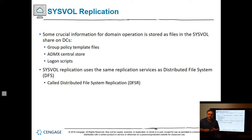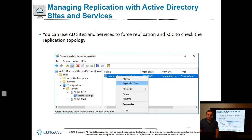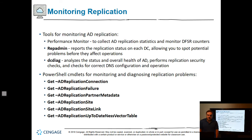Sysvol replication is involved when you have global catalogs. By default, all domain controllers are global catalogs unless you uncheck that box. Crucial domain operation information is stored in the Sysvol folder, and Sysvol replication uses DFSR. In Active Directory Sites and Services, go to NTDS Settings of the server to force a replication — it doesn't always work right away when you add a new domain controller, but usually 10 or 15 minutes later it will. Tools for monitoring AD replication include repadmin and DCDiag.